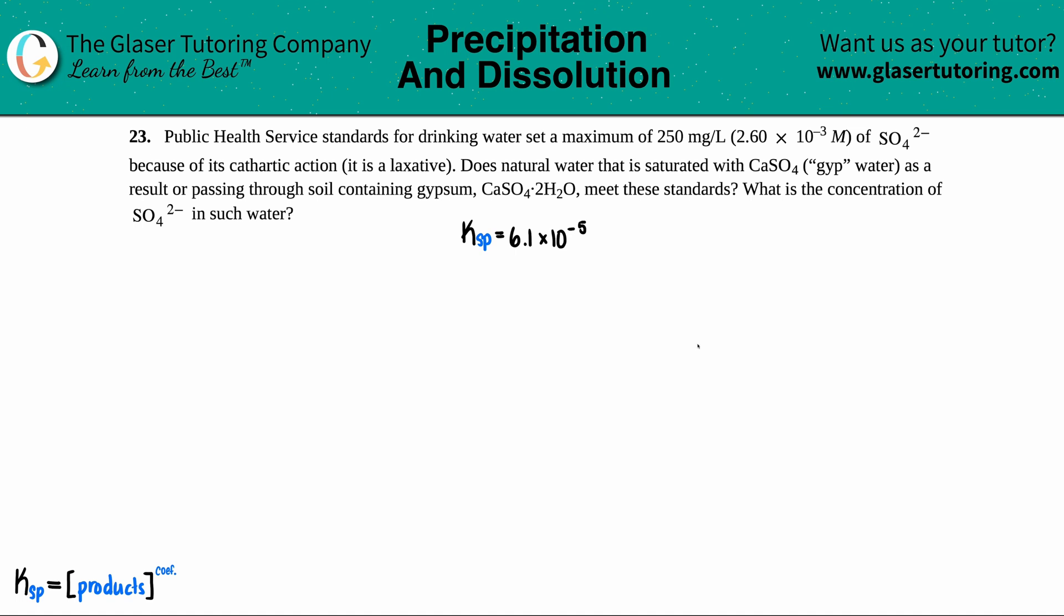Number 23, public health service standards for drinking water set a max of 250 milligrams per liter, which is 2.6 times 10 to the negative third molarity of the sulfate ion, which is SO4 2 minus because of its cathartic action. It's a laxative.